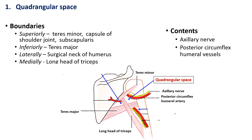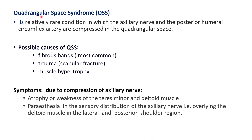Quadrangular space syndrome (QSS) is a rare condition in which the axillary nerve and the posterior humeral circumflex artery or vein get compressed within the quadrangular space. The most common cause is a fibrous band between the teres muscles and the triceps, which becomes stretched during abduction and lateral rotation, impinging on the axillary nerve and posterior circumflex humeral vessels. Other causes include trauma, scapular fracture, fracture of the surgical neck of the humerus, and muscular hypertrophy of the triceps and teres major.